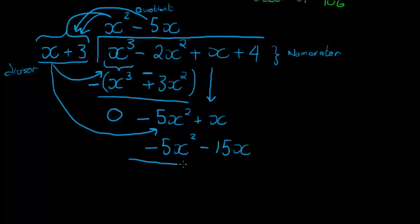Again, I have to subtract to get my remainder. Now, when I subtract, the signs just change. So, these become positive. My first term is 0, and this term becomes 16x. So, +16x. Bring down my final term, and this will be my last step, +4.